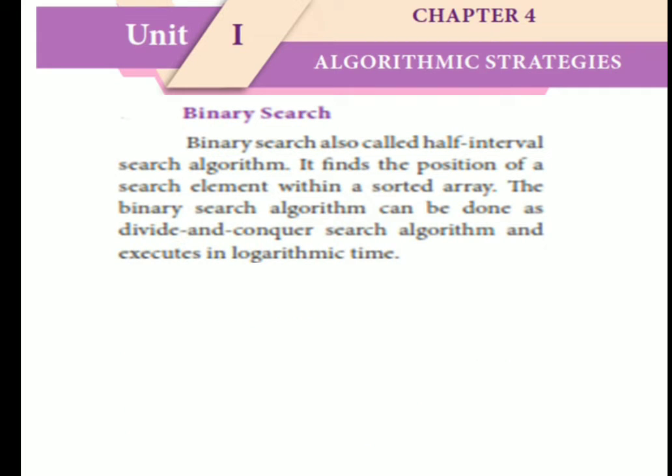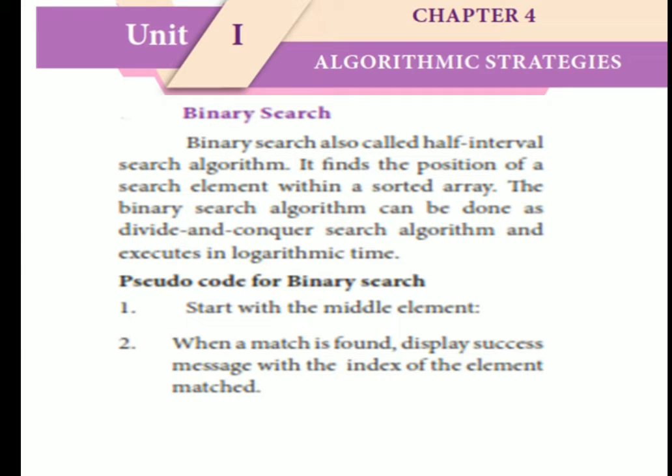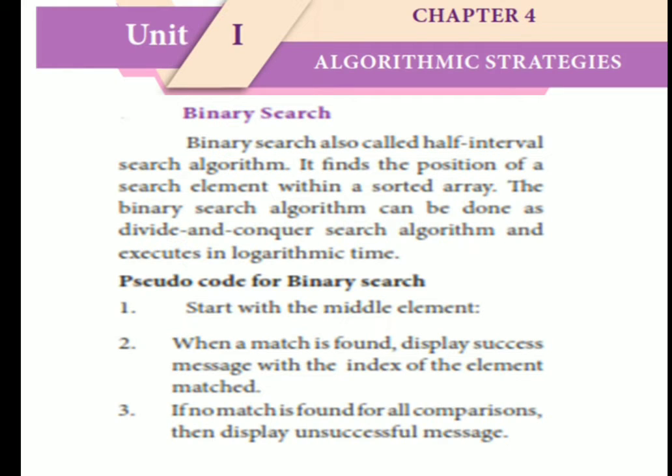Binary search, also called half-interval search algorithm, finds the position of a search element within a sorted array. The binary search algorithm uses a divide-and-conquer approach and executes in logarithmic time. Pseudo code: Start with the middle element. When a match is found, display the success message with the index of the matched element. If no match is found after all comparisons, display an unsuccessful message.